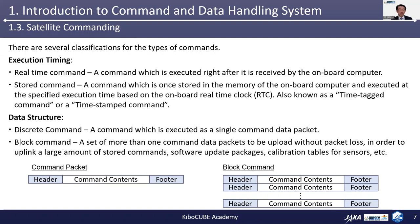Usually, a stored command set consists of more than one command packet, and their order and timing is strictly designed to ensure secure operation of the satellite. The second classification is the data structure. A discrete command is a command executed as a single command data packet — this is the common format of a real-time command. The other one is the block command, which is a set of more than one command data packets to be uploaded without packet loss, used to obtain a large amount of stored commands, software update packages, calibration tables for sensors, etc.